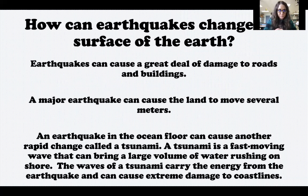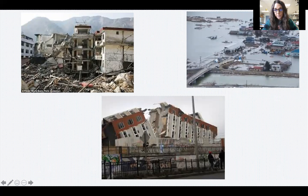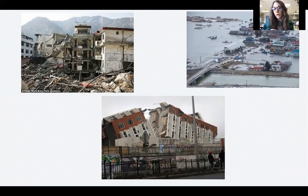Here are some pictures of earthquakes that have caused lots of damage — you can see buildings destroyed, one building split in half. Here is a picture of damage caused by a tsunami: lots of flooding where a very large wave came in and took over that community. Very sad when earthquakes and tsunamis happen.